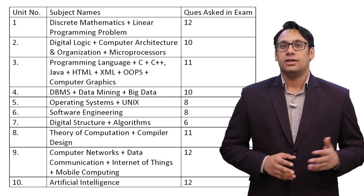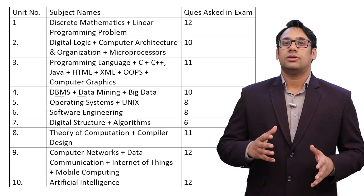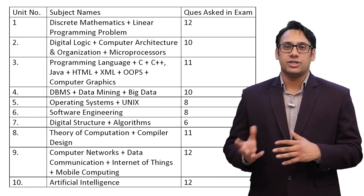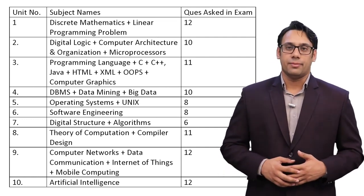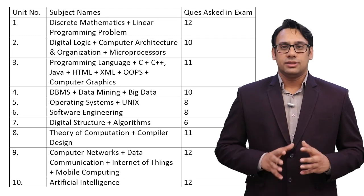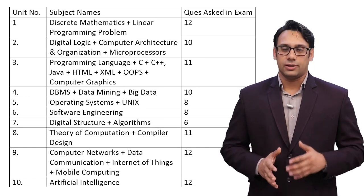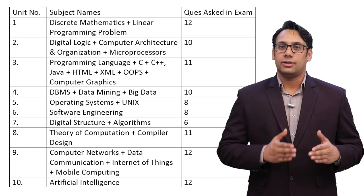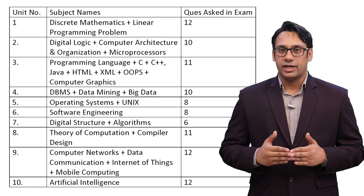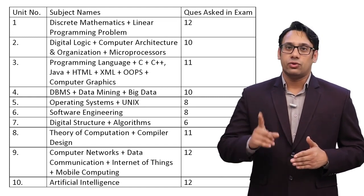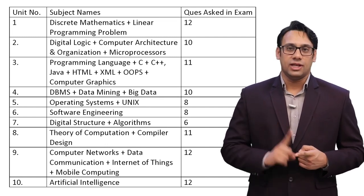The question distribution changes year by year — previously no questions from compiler design, but this year they are asking questions from it. This subject is very important even if you are preparing for the GATE examination, so you should finish compiler design thoroughly. Unit 9 covers computer networks, data communication, IoT, and mobile computing. IoT and mobile computing account for only one question, so data communication and computer networks — which account for 11 questions — become the most important part of this unit.